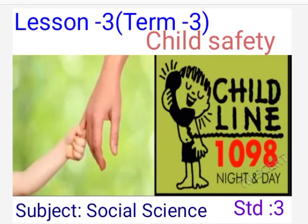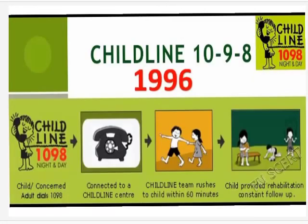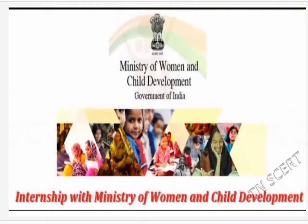Now we learn about child safety. Child line number is 1098. Child line number is a helpline number for children under the age of 18. Child line service was first established as a project in the year 1996. Later, between 1998 to 1999, child line was established all across India under the Ministry of Women and Child Development.